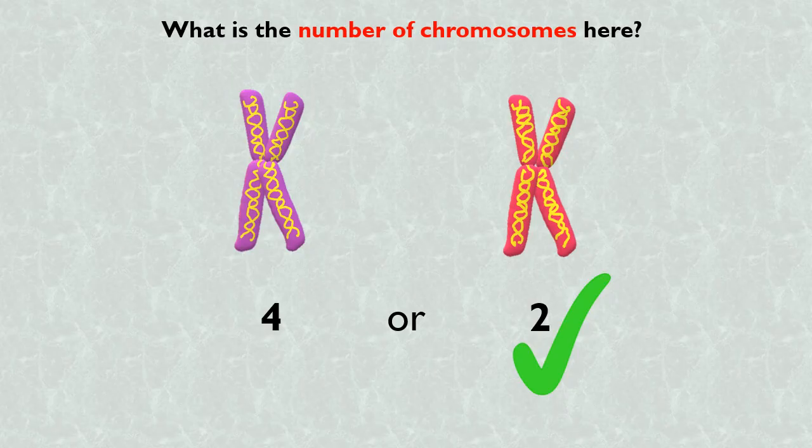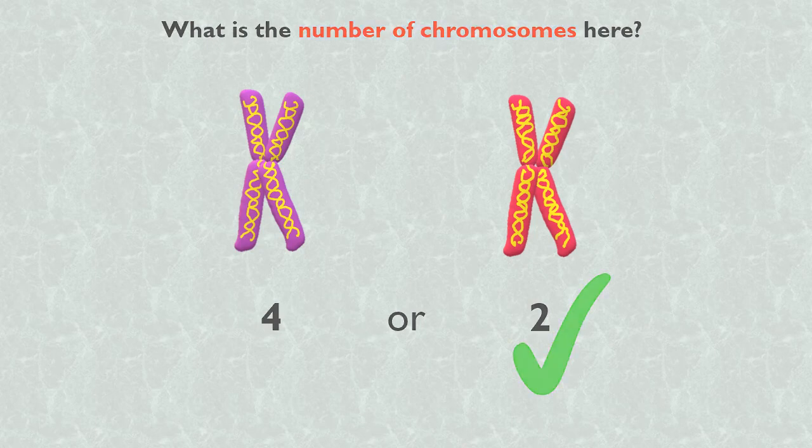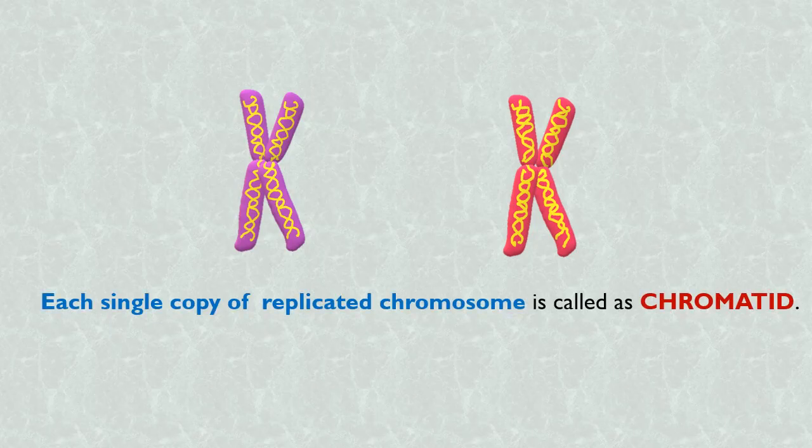In biology, the identical copies of chromosomes connected at centromere are considered as a single chromosome. Each single copy of the replicated chromosome is termed as chromatid.